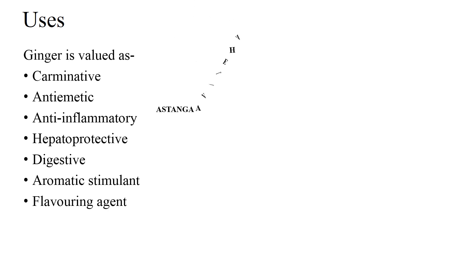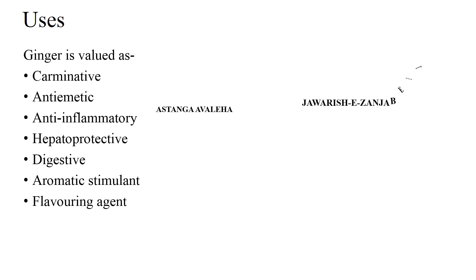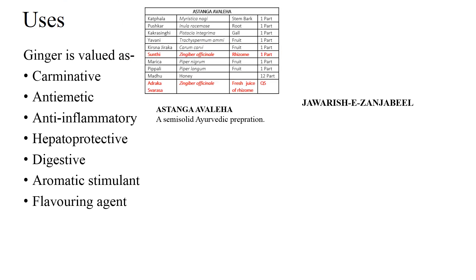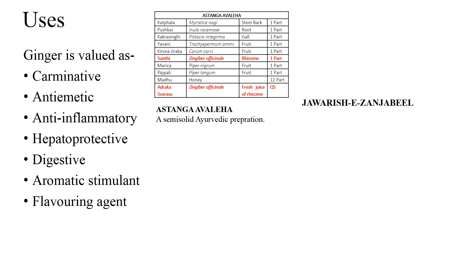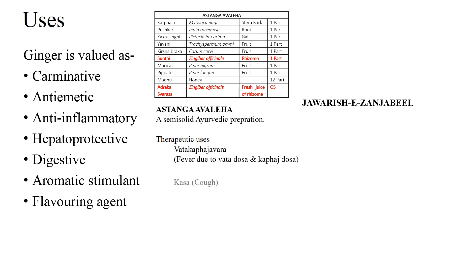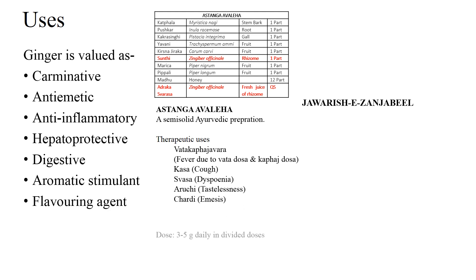Ashtang Avle and Jawarish Gingivir are two important formulations containing ginger. Ashtang Avle is a semi-solid Ayurvedic preparation. Its therapeutic uses include Vata-Kuf Jwar meaning fever due to Vata dosha and Kuf dosha, Kasa meaning cough, Swas meaning dyspnea, Aruchi meaning tastelessness, and Chardi meaning emesis. Its dose is 3 to 5 grams daily in divided doses.